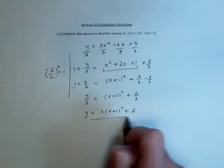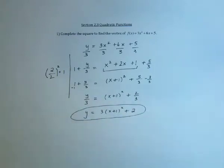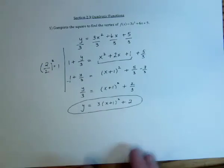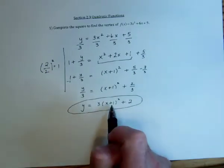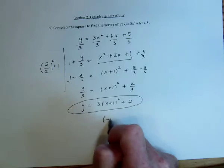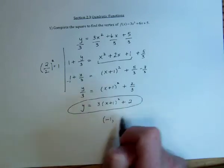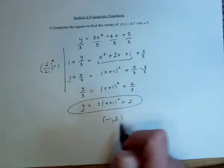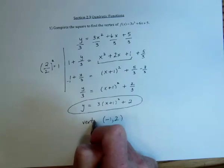Now the last part is the vertex. Well, that just comes from these two numbers here. This part is saying move over to the left by 1, and this is saying move up by 2. So there is the vertex.